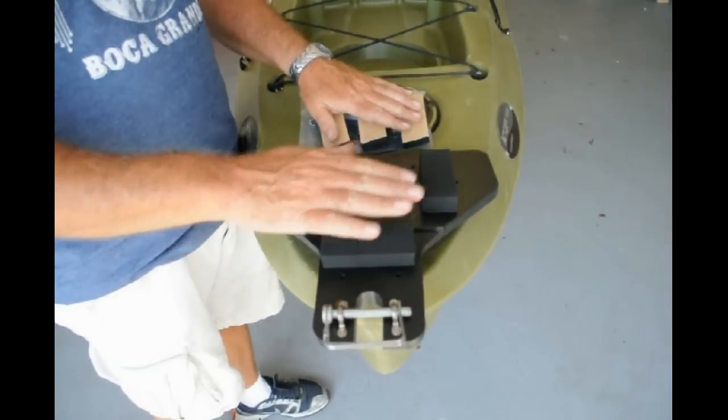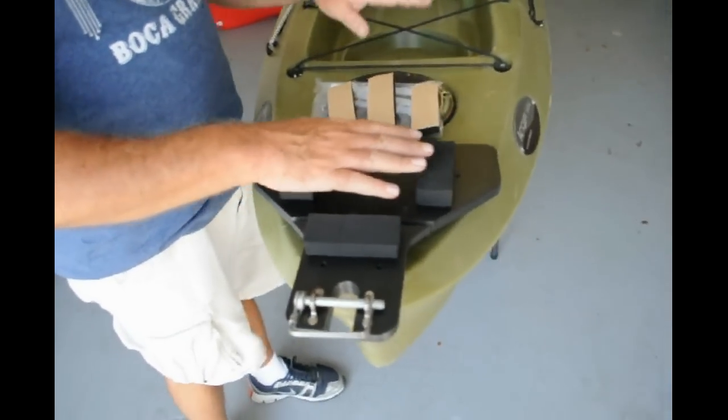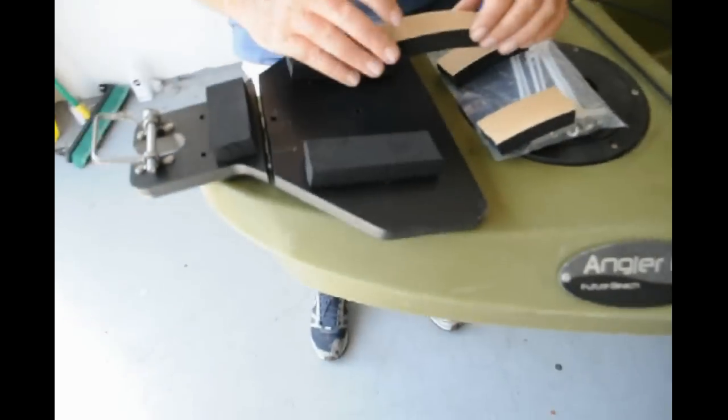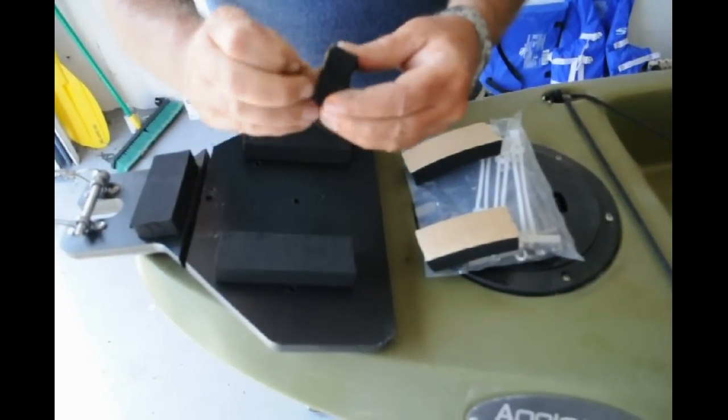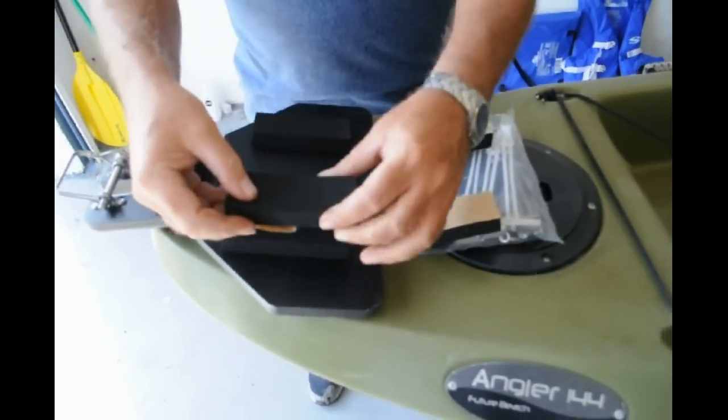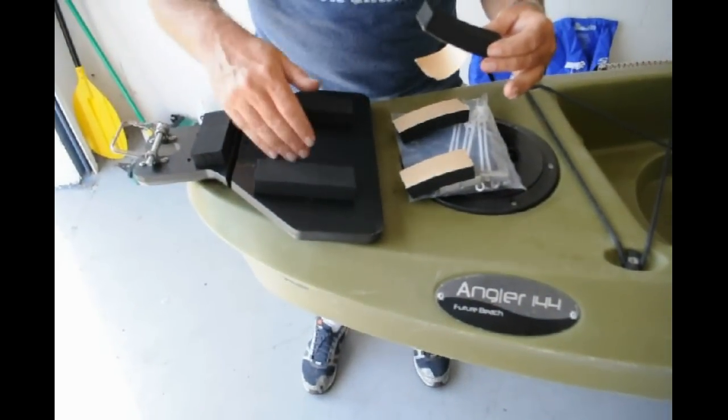With the three neoprenes, these are already installed, but you see there's three of them on either plate. With this plate, we take two of them, literally peel the back off, and apply it to the plastic in an equal distance way, trying not to cover up the holes.